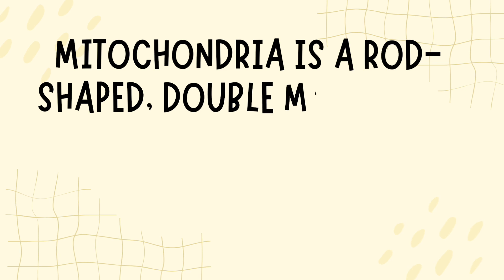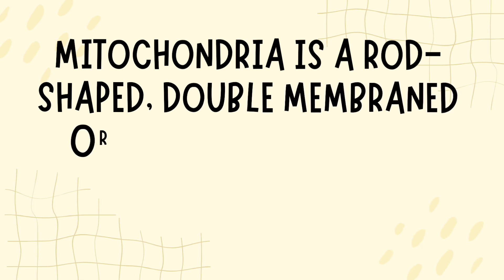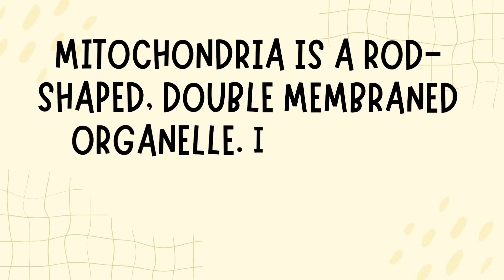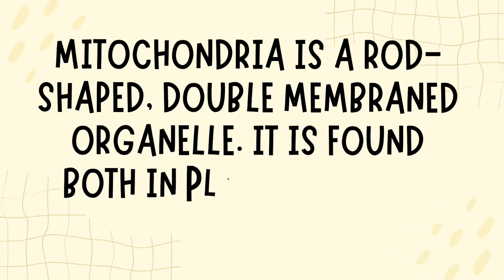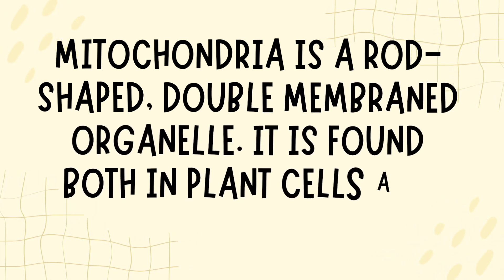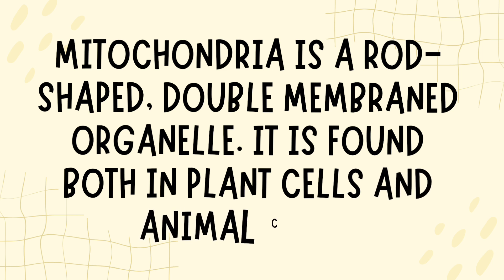Briefly describe the structure of mitochondria. Mitochondria is a rod-shaped, double-membraned organelle. It is found both in plant cells and animal cells.